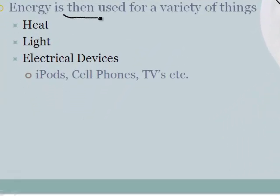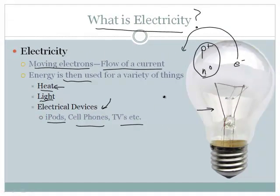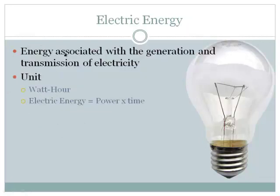We use that energy for a variety of things. We use it for heat — you can heat your house with electricity. We use it for light bulbs, like the light bulb over here. We use it for electric devices such as iPods, cell phones, TVs. We use electricity for everything. I'm looking at a computer right now as I make this podcast, and as you watch this podcast, it's being powered by electricity. So that's what electricity is.